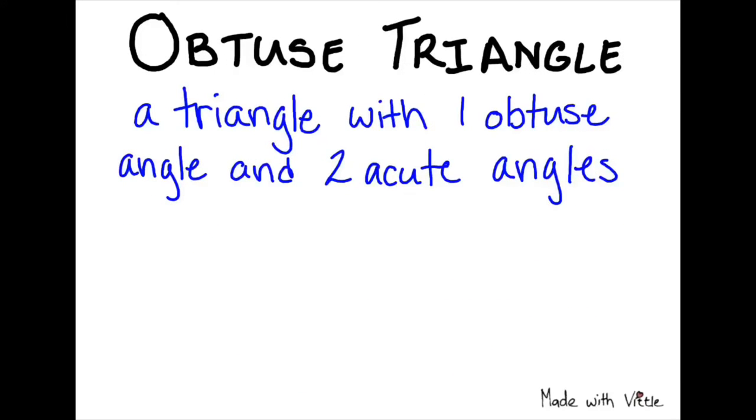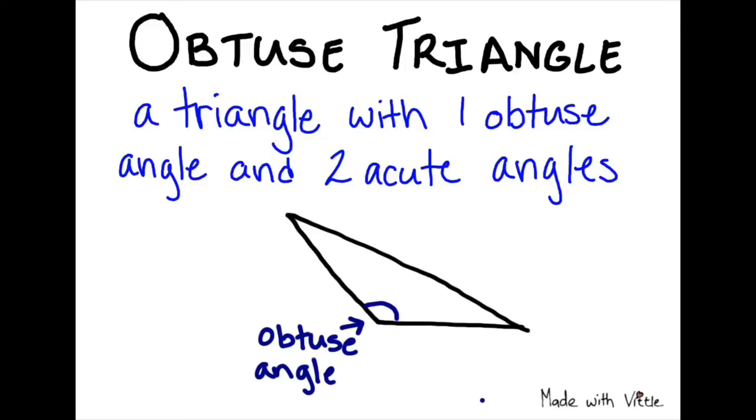Our third type of triangle, when we look at them by angles, is an obtuse triangle. An obtuse triangle is a triangle with one obtuse angle and two acute angles. Remember that an obtuse angle measures greater than 90 degrees, but it also measures less than 180 degrees. And this will be important as we continue our study of triangles.